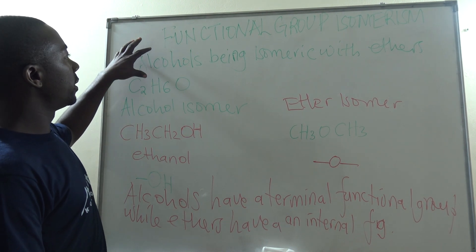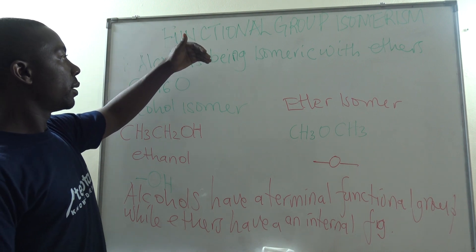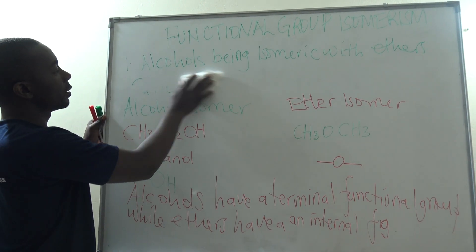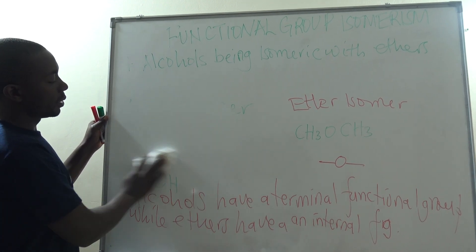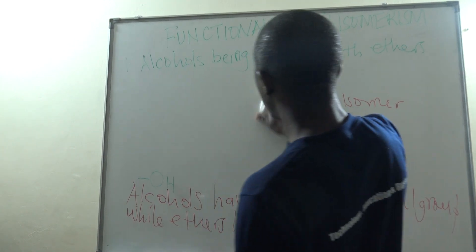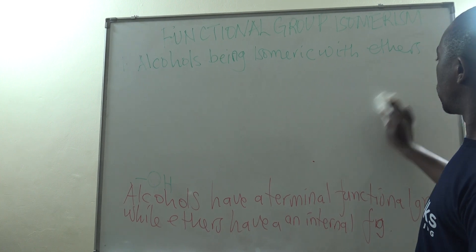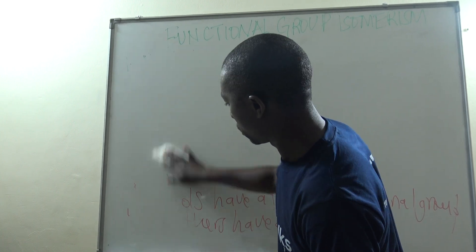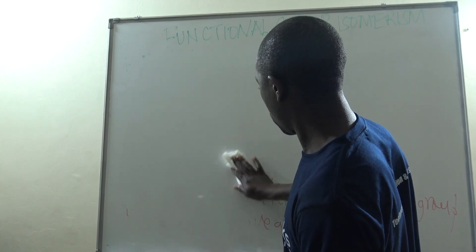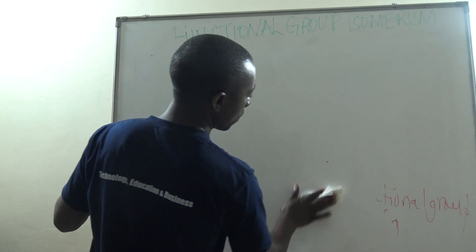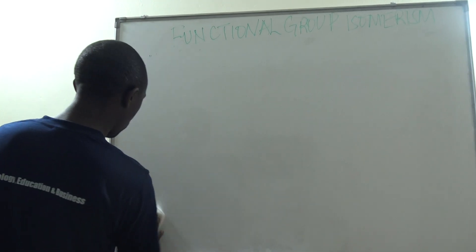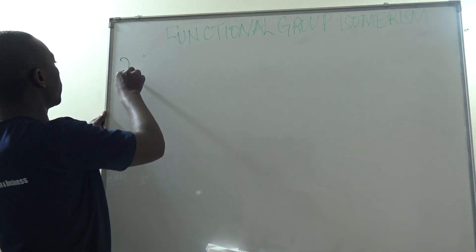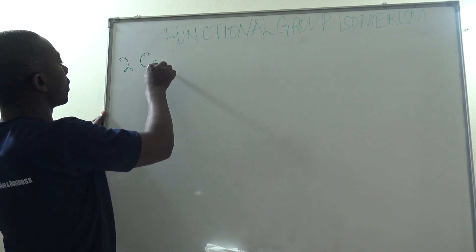Functional group isomerism is the existence of compounds with the same molecular formula but differing in the functional group. It is not only alcohols — there is a variety of organic compounds and homologous series that exhibit functional group isomerism. We can now look at another type of compounds: carbonyl compounds.